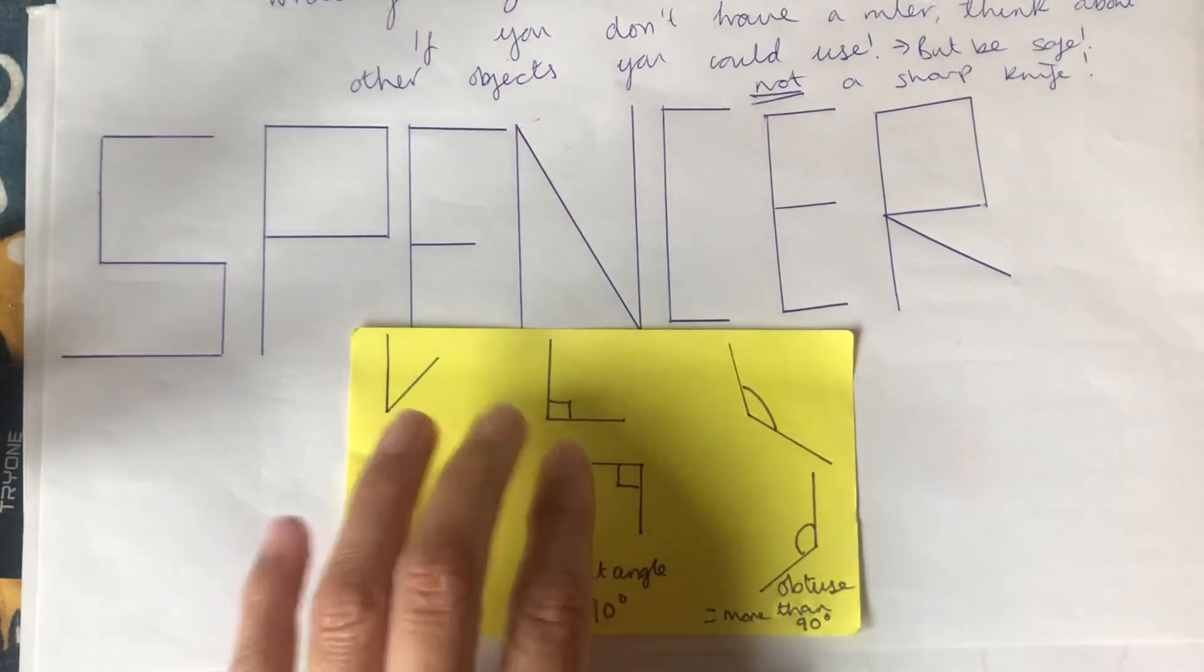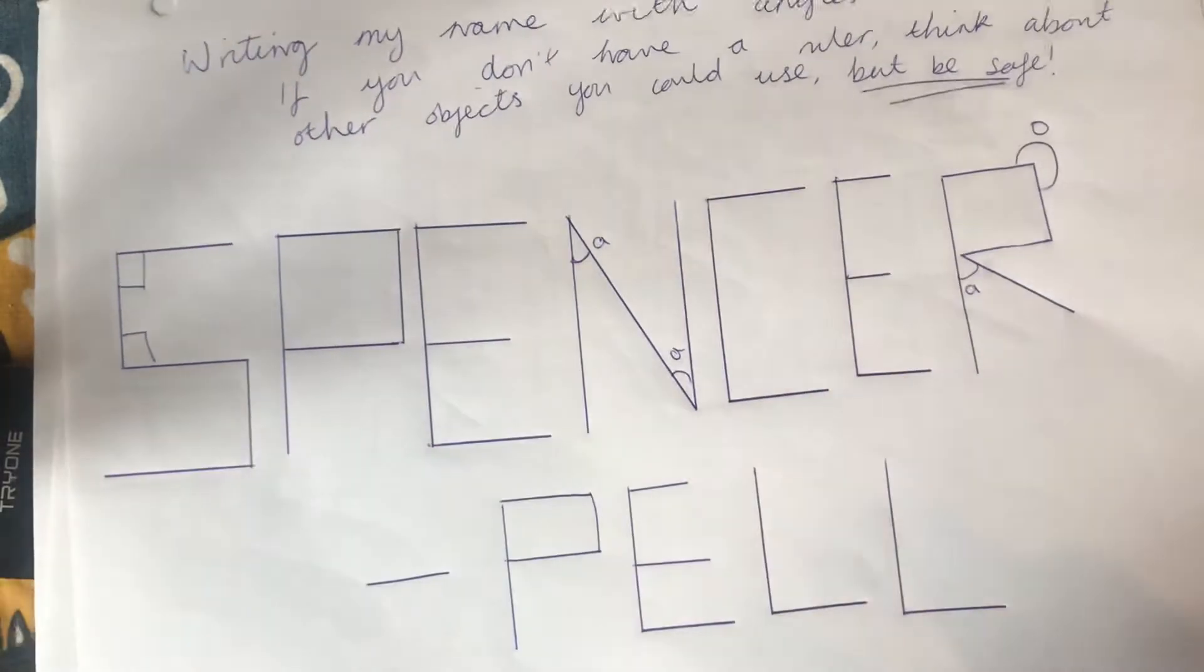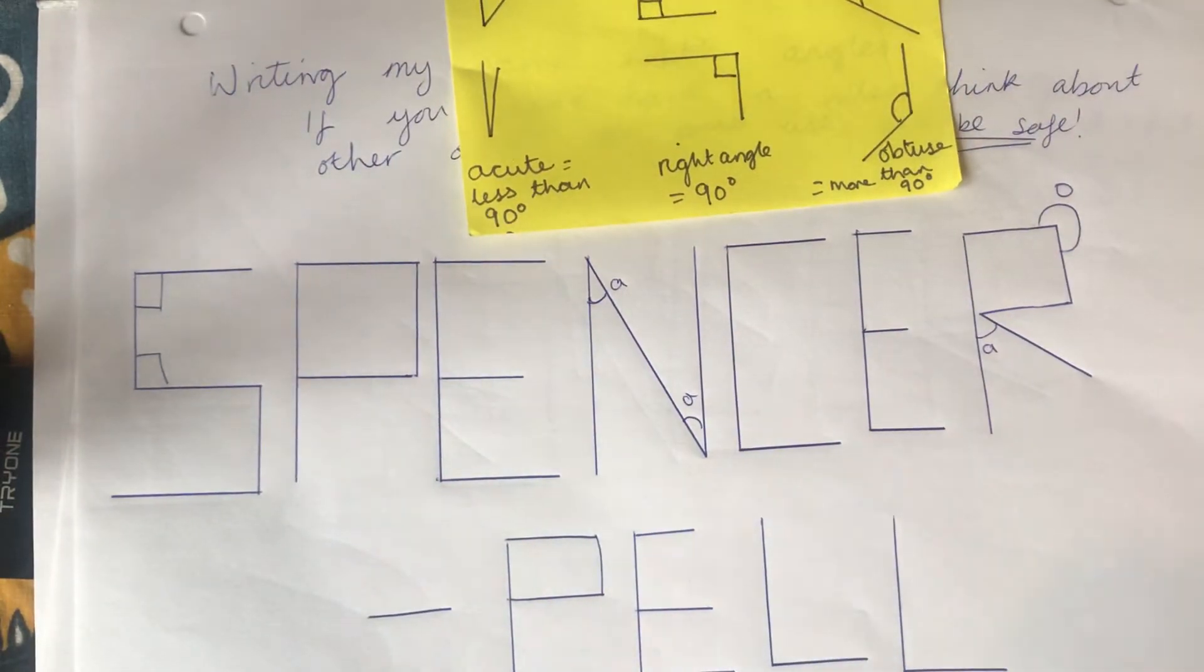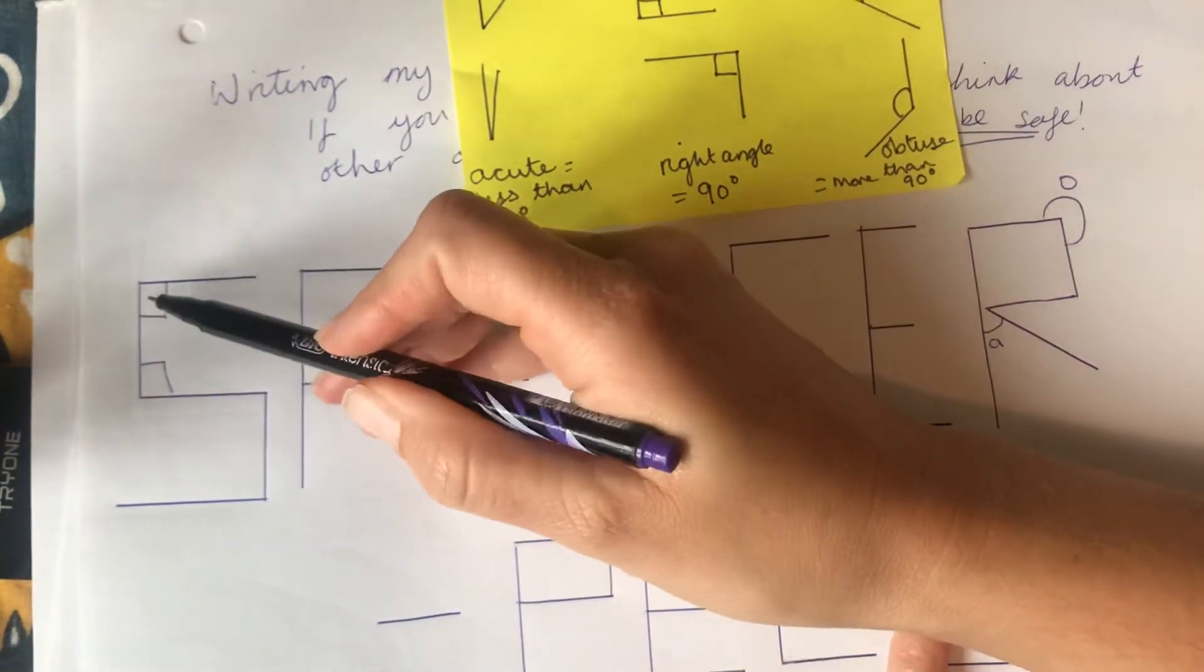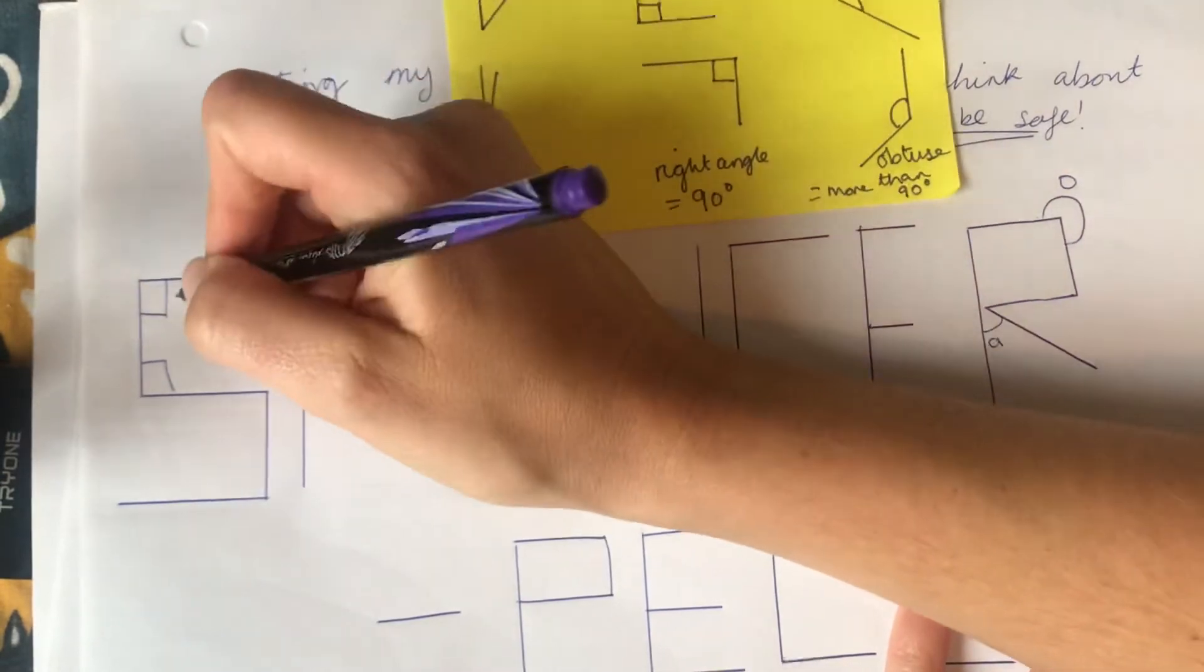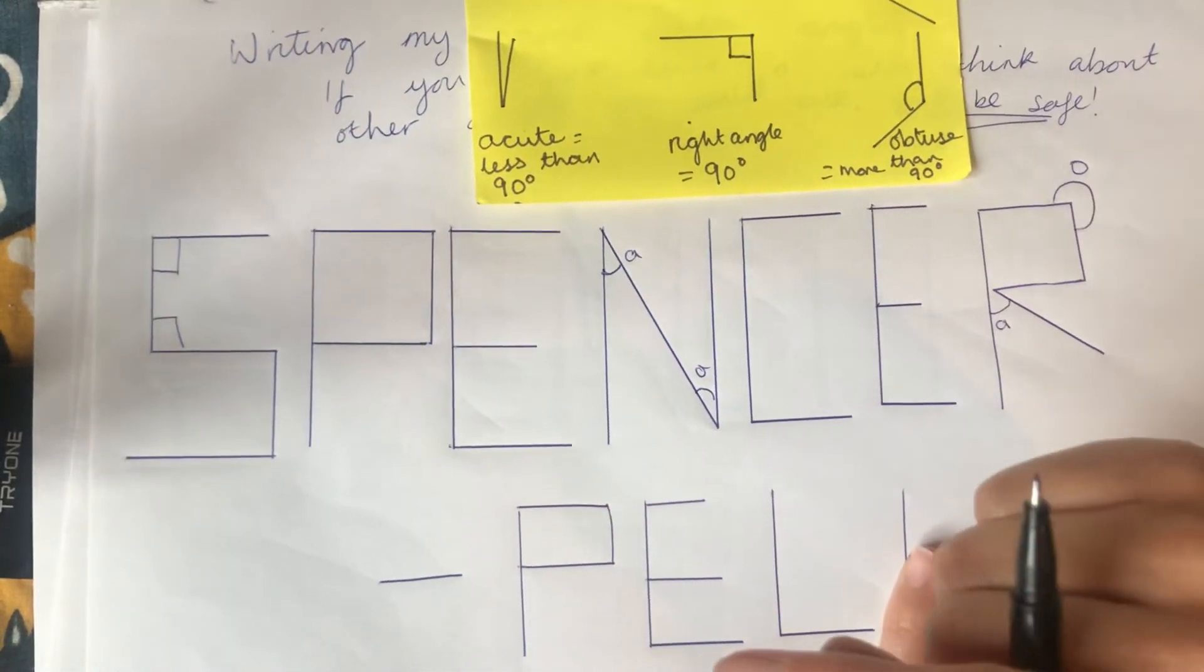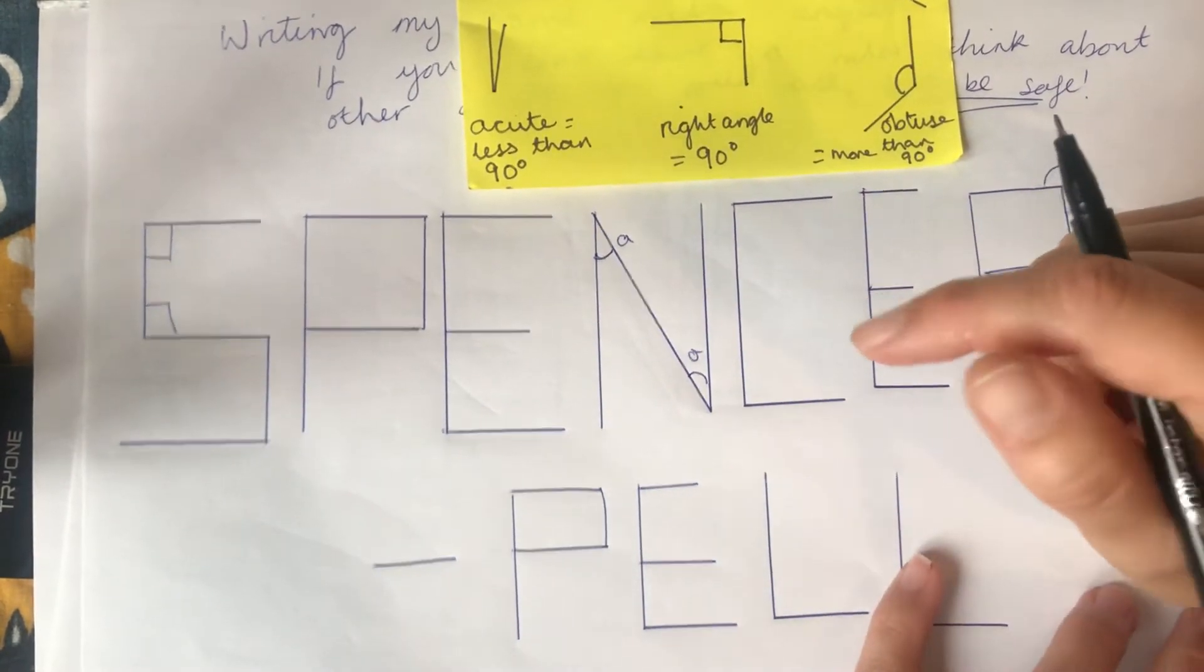So I've done that there so we can try and find some together. In fact I've got this one here because I managed to do my whole name at one point, so I'm gonna put that there to remind us. So here obviously in the S, because I've used a ruler, I know that these are 90 degree angles so I have put the square to show that they are right angles. In fact when you use a ruler a lot of them are going to be right angles, so it depends on your name as to whether you might have anything else.